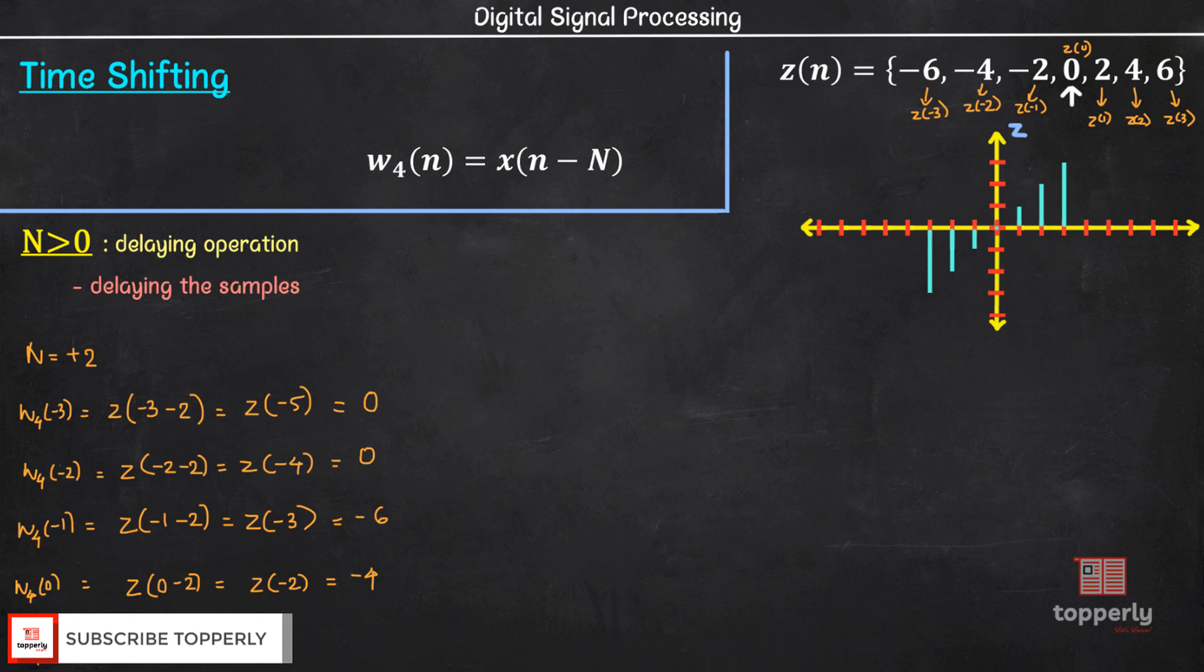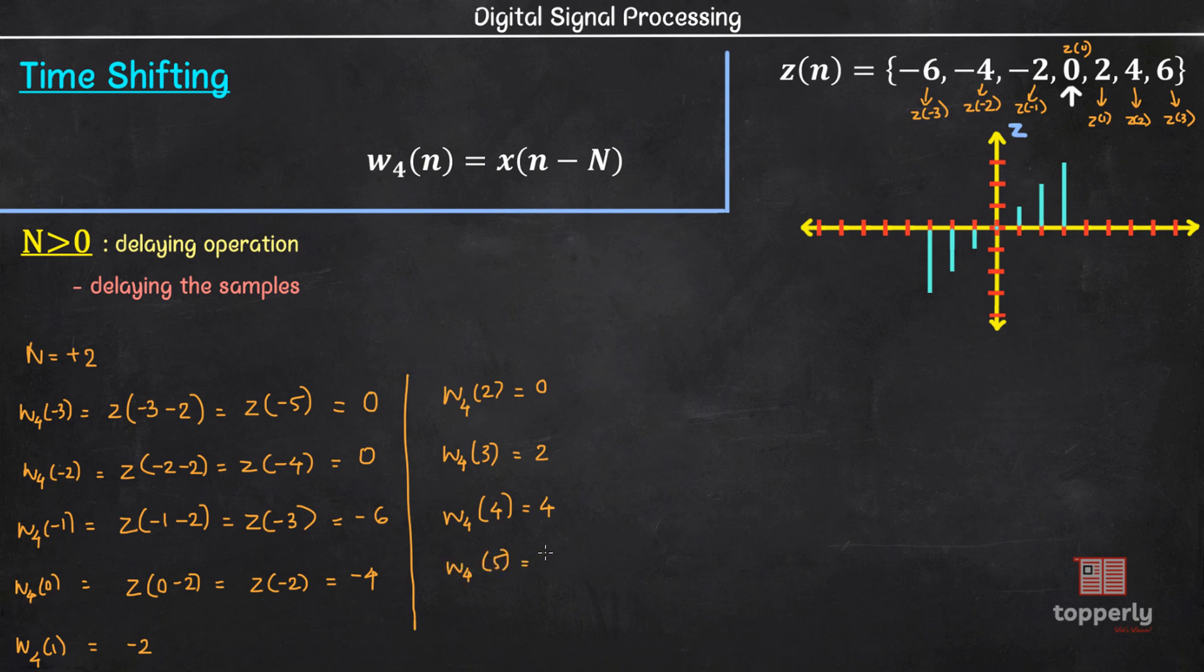If you proceed in similar fashion, you get w4 of 1 equal to -2, w4 of 2 equal to 0, w4 of 3 equal to 2, w4 of 4 equal to 4, and w4 of 5 equal to 6. On plotting this new sequence, we can see that the discrete signal is delayed by 2 units than the original signal. Thus, you can see how N greater than 0 can result in delaying operation.